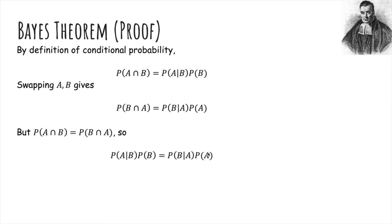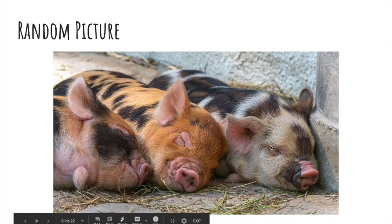We set the right-hand sides equal together, and then we divide both sides by probability of B, and now we have probability of A given B in terms of B given A. That was Bayes' theorem.